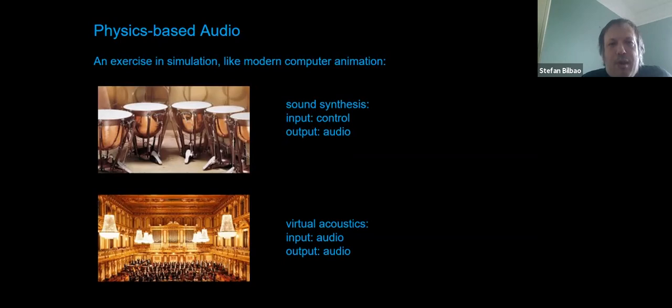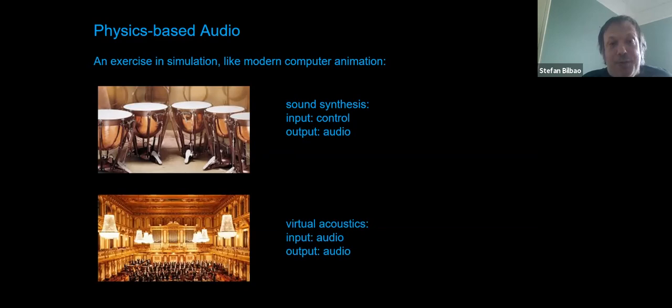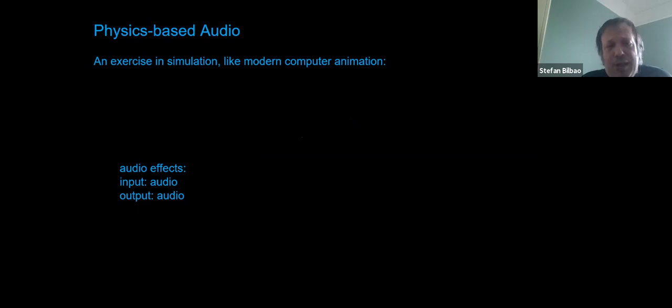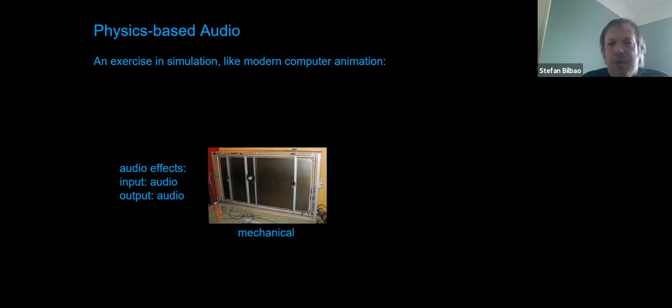Like all analogies, this one breaks down if you push it too far—particularly when you think about audio effects, which don't have a clear analog in graphics. The room is one example of an effect, but there are others: plate reverb, mechanical reverb, spring reverbs. And then there are electronic effects, like the circuit schematic for a voltage-controlled filter for the Moog.